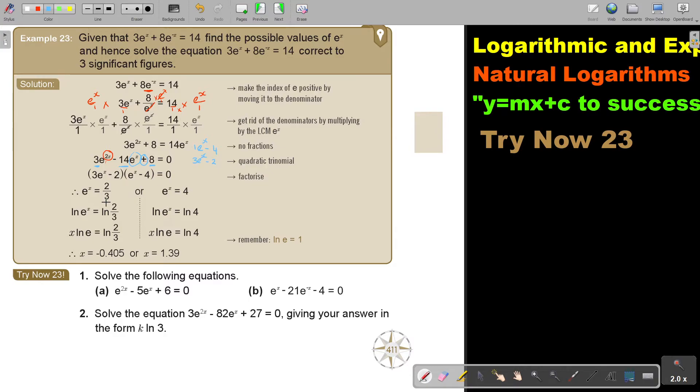And then, basically, I just put ln on both sides. So remember, that will become, that's an e, so that will become 1. So x is ln 2 over 3. And then here, the same, if I put ln, and I bring the x, then it's ln 4. And then if I simplify it, correct to 3 significant figures, I get this, and I get this. That's my two answers.